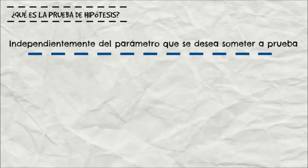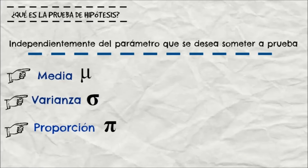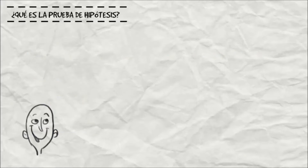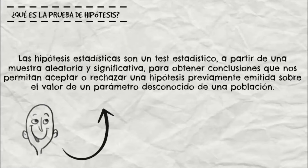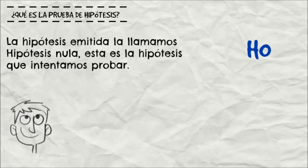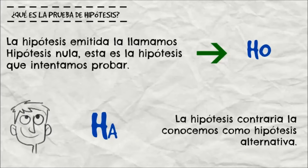Independientemente del parámetro que se desea someter a prueba, como media, varianza, proporción, etc. En nuestro video someteremos a prueba el parámetro de proporción. Las hipótesis estadísticas son un test estadístico a partir de una muestra aleatoria y significativa para obtener conclusiones que permitan aceptar o rechazar una hipótesis previamente emitida. La hipótesis emitida se asigna por H0 y la llamamos hipótesis nula. La hipótesis contraria se asigna por HA y la conocemos como hipótesis alternativa.